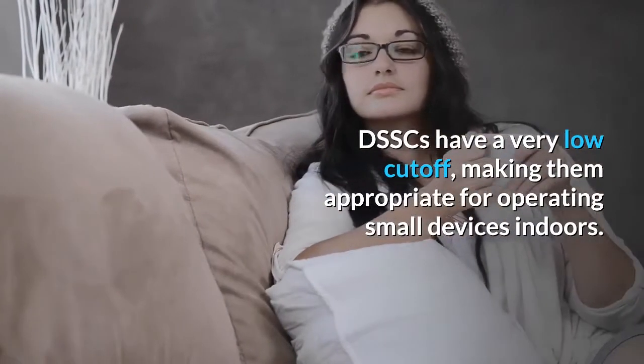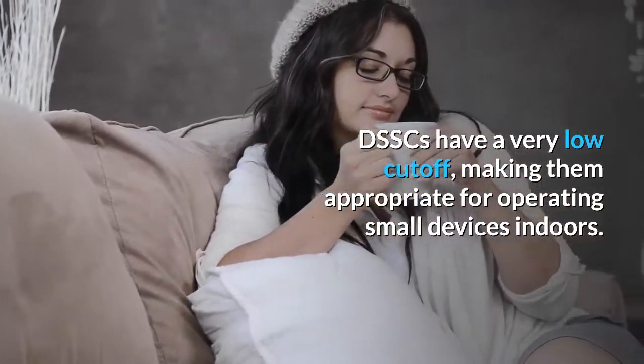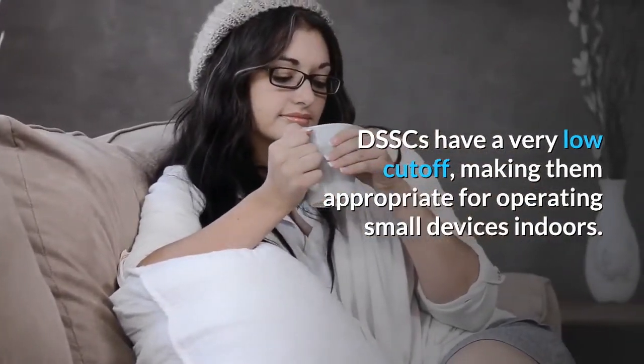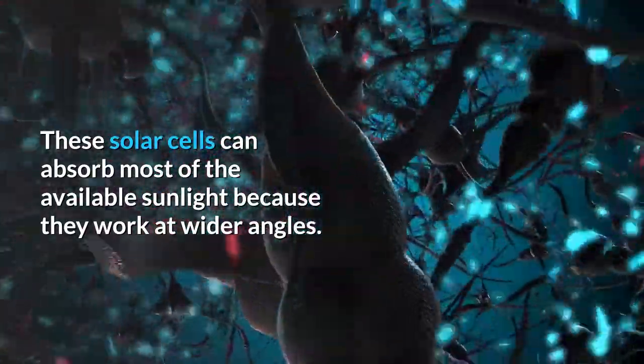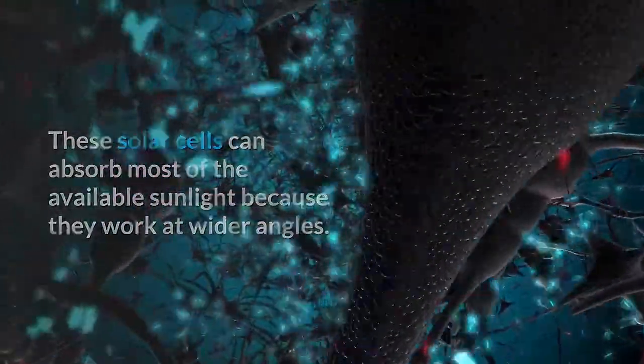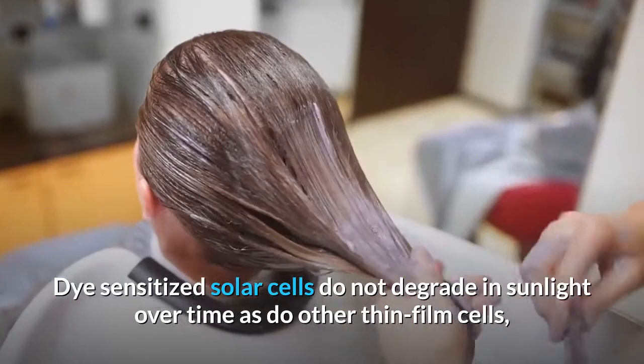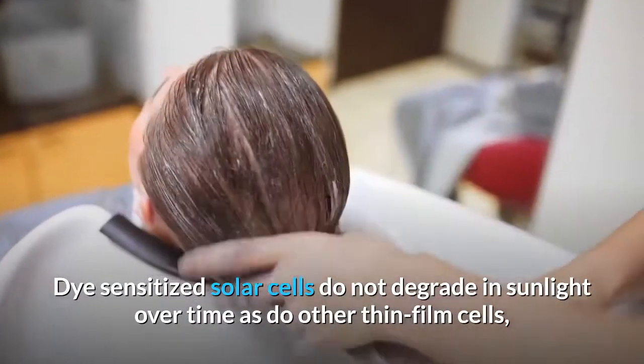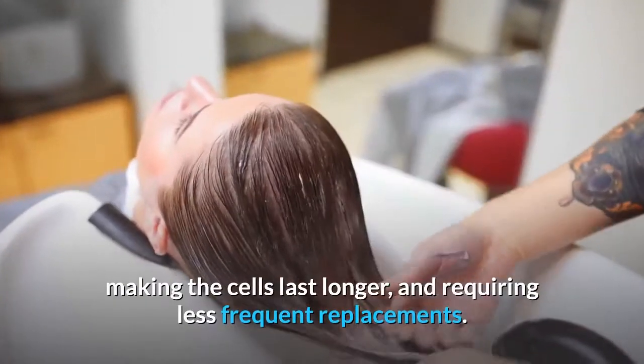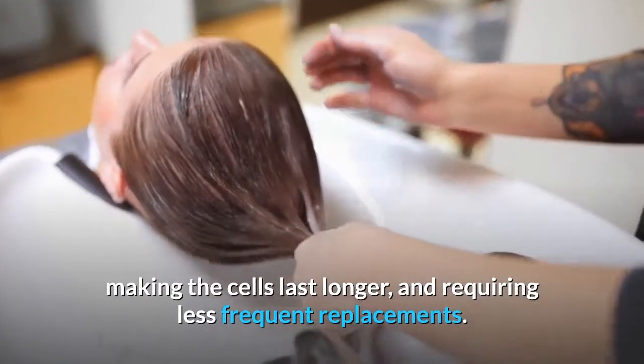These solar cells can absorb most of the available sunlight because they work at wider angles. Dye sensitized solar cells do not degrade in sunlight over time as do other thin film cells, making the cells last longer and requiring less frequent replacements.